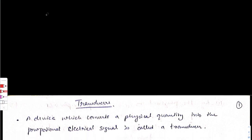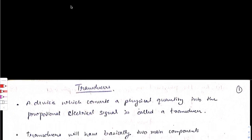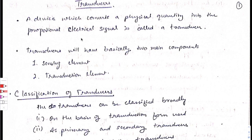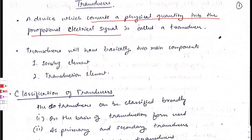Hello everyone, welcome to another video on transducers, which is a topic of PI instrumentation. Starting from the basic introduction: a transducer is a device which converts a physical quantity into a proportional electrical signal. It converts heat energy or any kind of energy into an electrical signal.